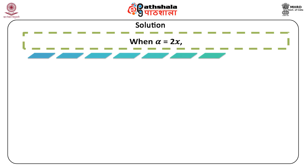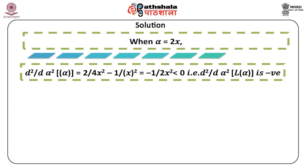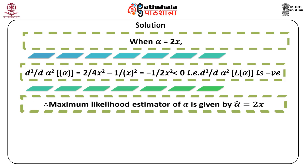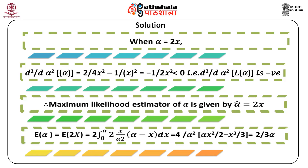Verifying it is a maximum: d^2(log L)/d(alpha^2) evaluated at alpha = 2x equals 2/(4x^2) - 1/x^2 = -1/(2x^2) < 0, confirming a maximum. Therefore the MLE of alpha is alpha-hat = 2x. To check for bias: E(alpha-hat) = E(2x) = 2 * integral from 0 to alpha of 2x*(alpha - x)/alpha^2 dx = (2/3)*alpha. Since E(alpha-hat) ≠ alpha, the estimator alpha-hat = 2x is not an unbiased estimate of alpha.